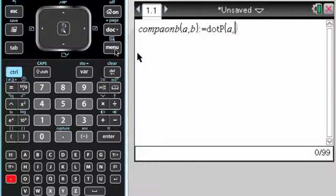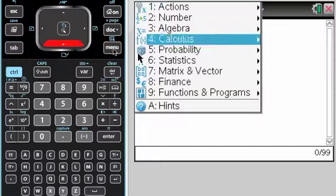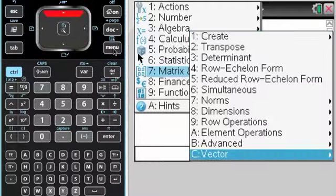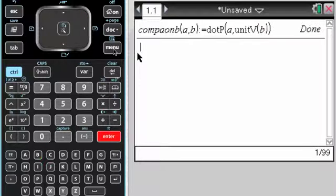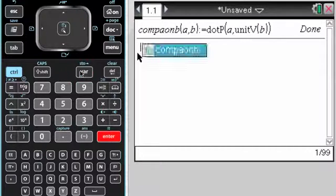So A, comma, and then go back in, menu, 7, vector, and unit vector of B, and I get that. So now what I can do is in var, I have that.